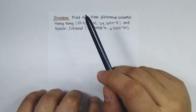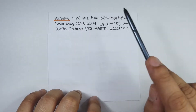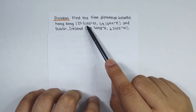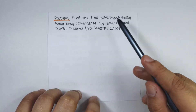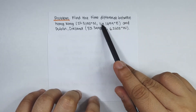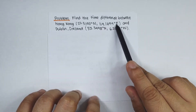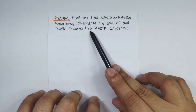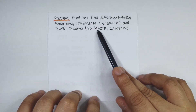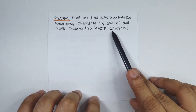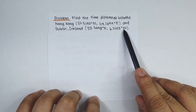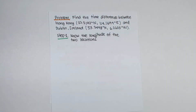Problem number one: find the time difference between Hong Kong, located at 22.3139 degrees north and 114.1694 degrees east, and Dublin, Ireland, located at 53.3498 degrees north and 6.2603 degrees west.